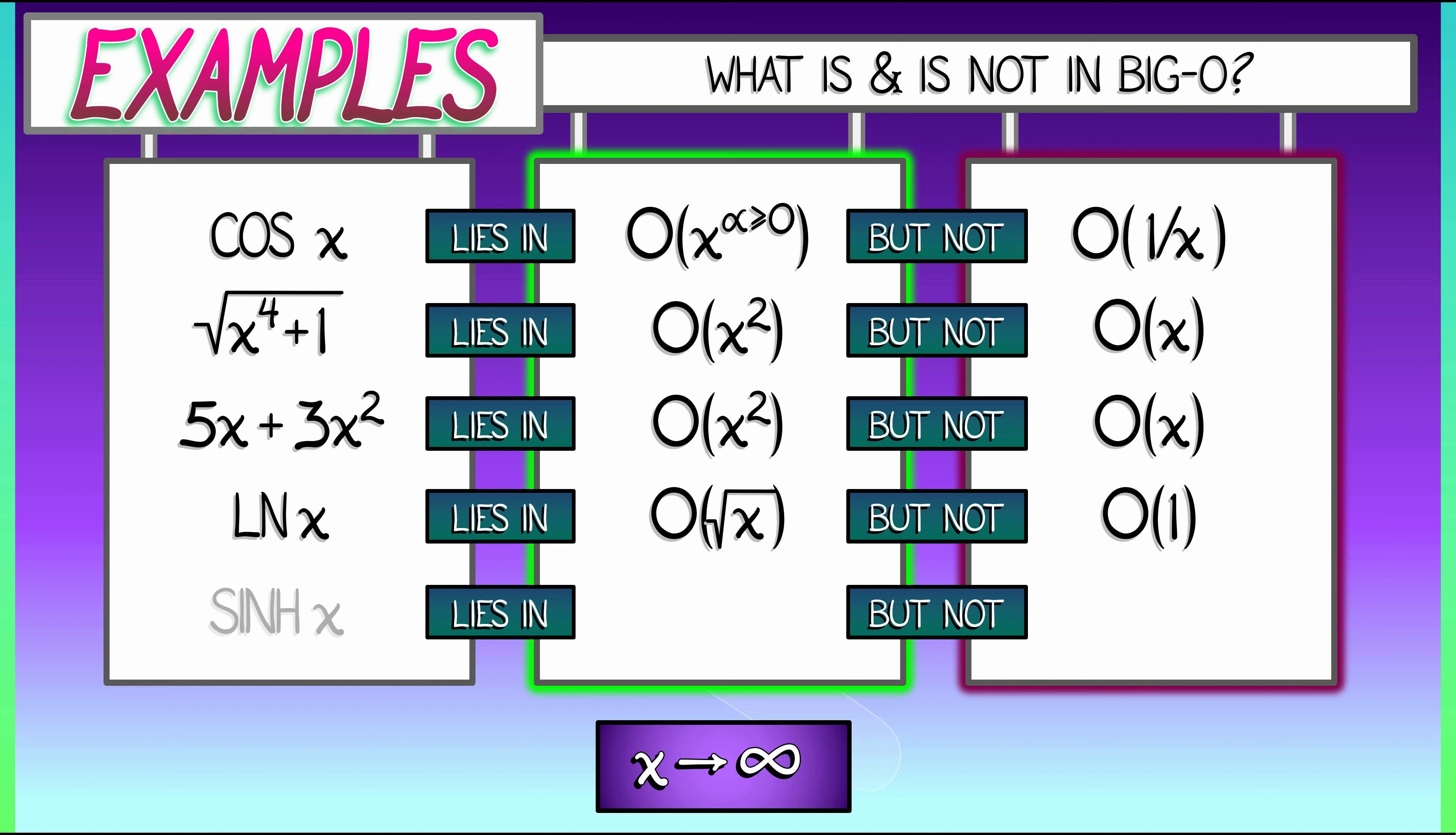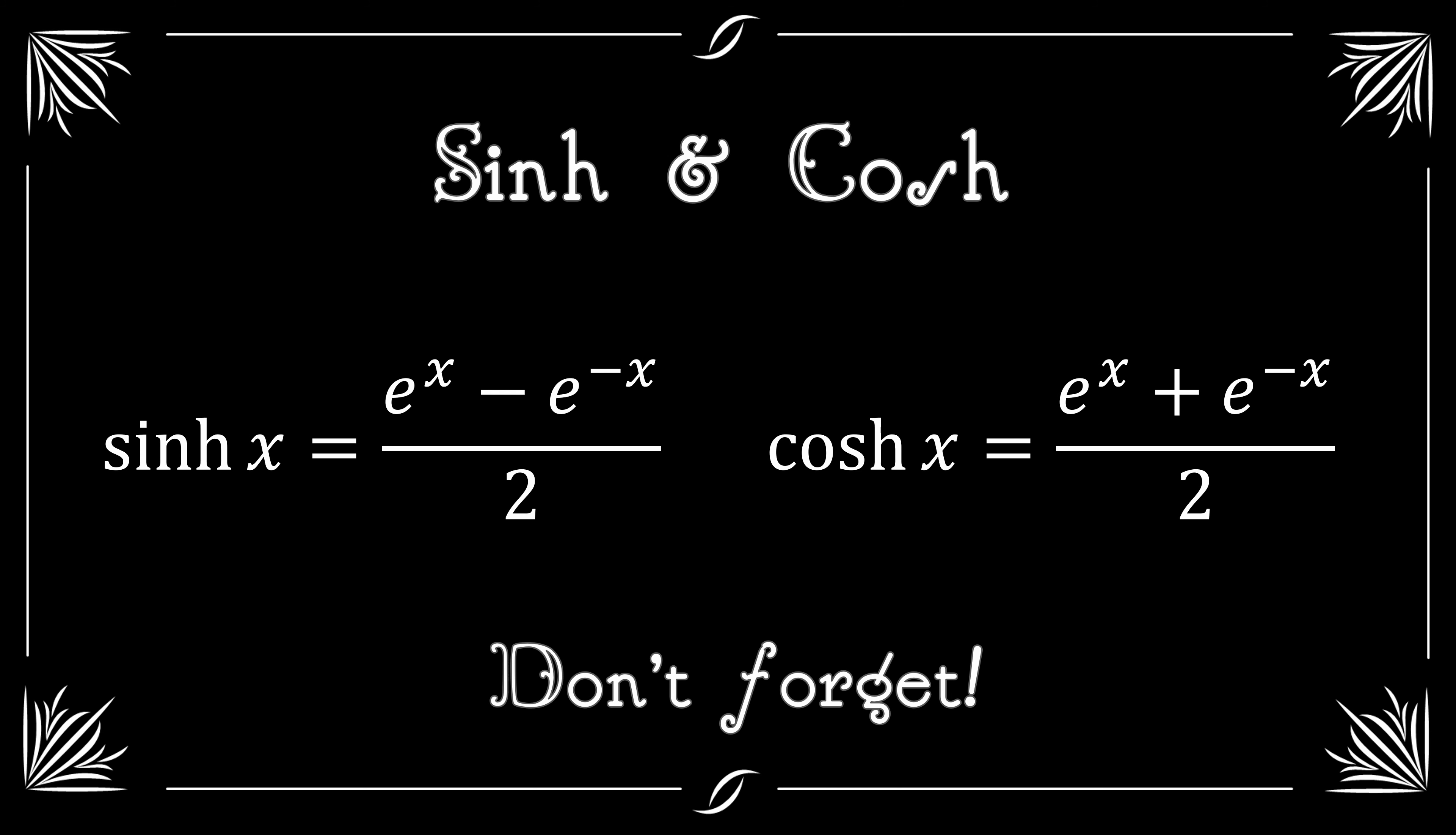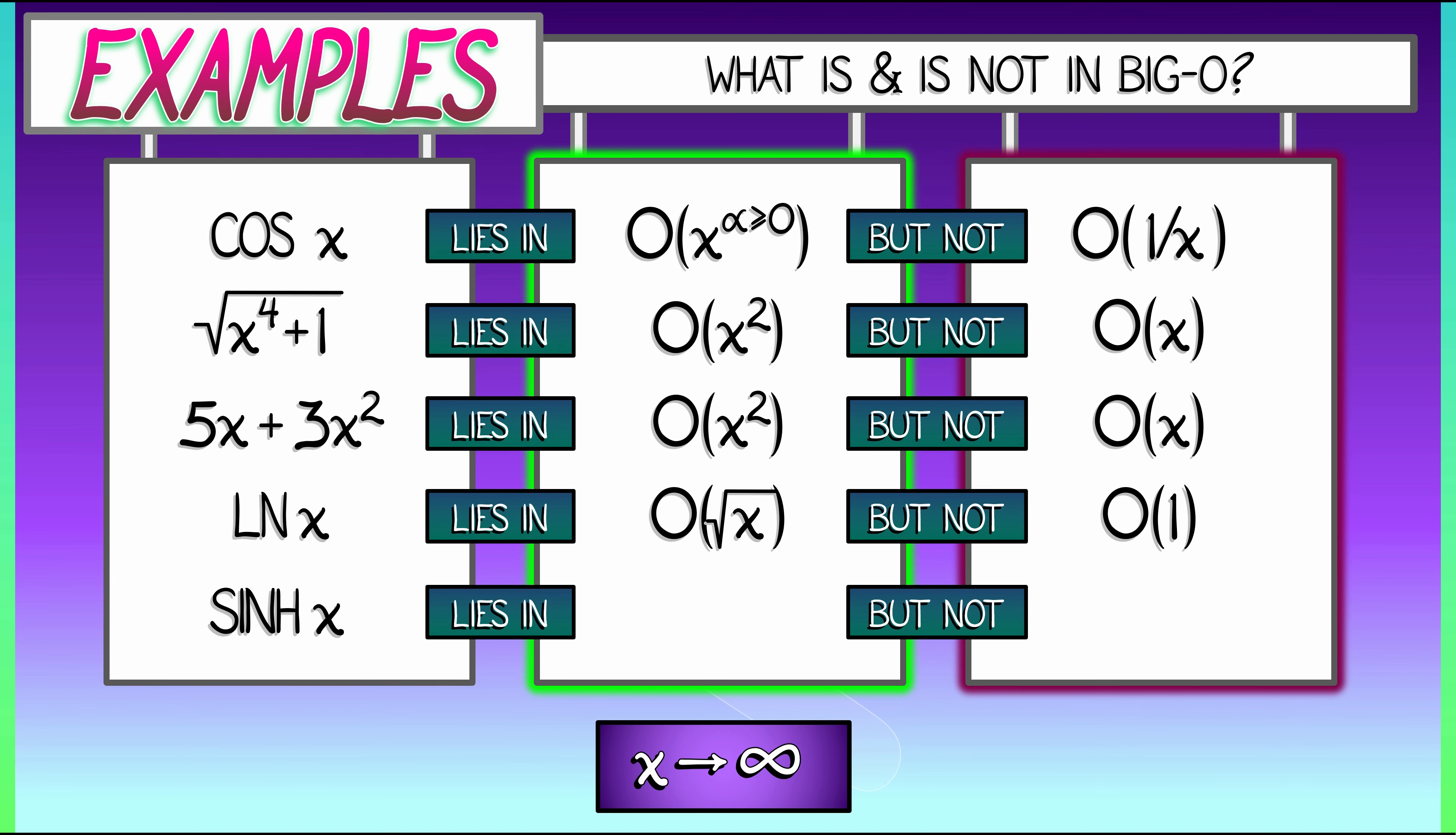Lastly, let's consider the hyperbolic sine of x, and remember its definition in terms of exponential functions. There's a one half in there - it's no big deal. We can say easily, immediately, that sinh of x lies in big O of e to the x. But not big O of x to the alpha for any value of alpha. Hyperbolic sine, hyperbolic cosine, they both have exponential growth. They completely blow past any kind of polynomial growth, because exponential dominates polynomial.